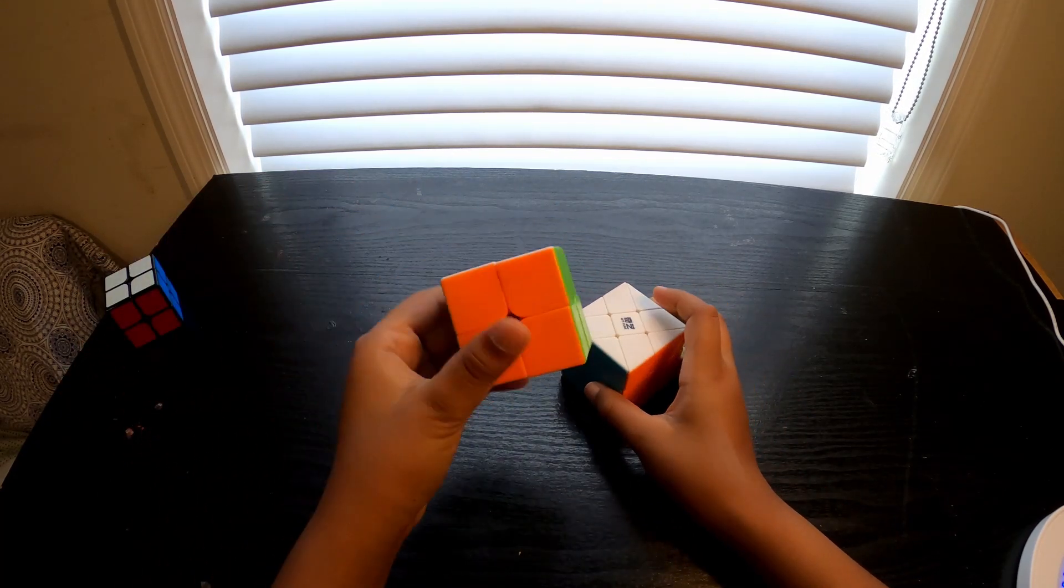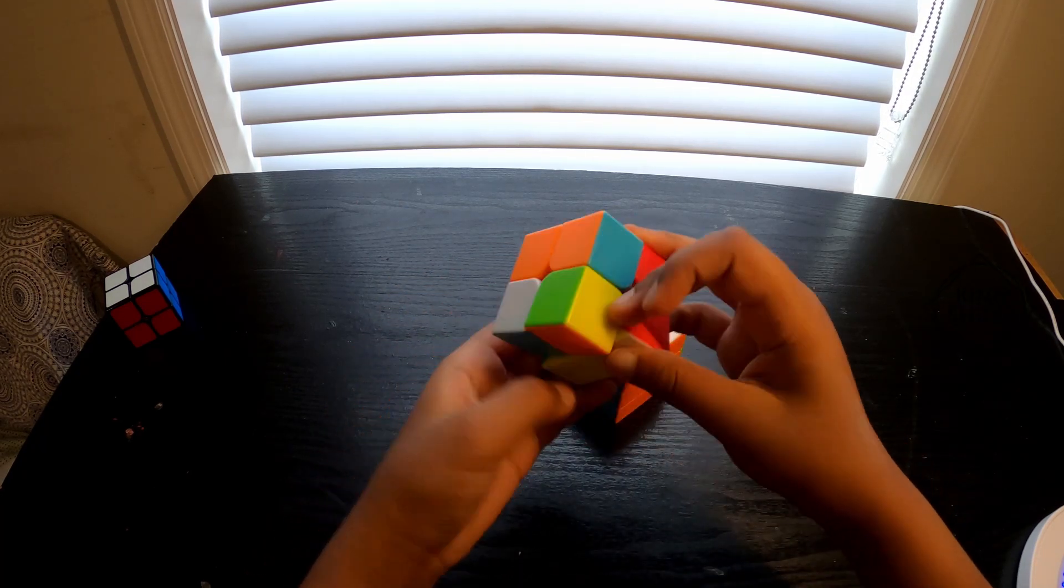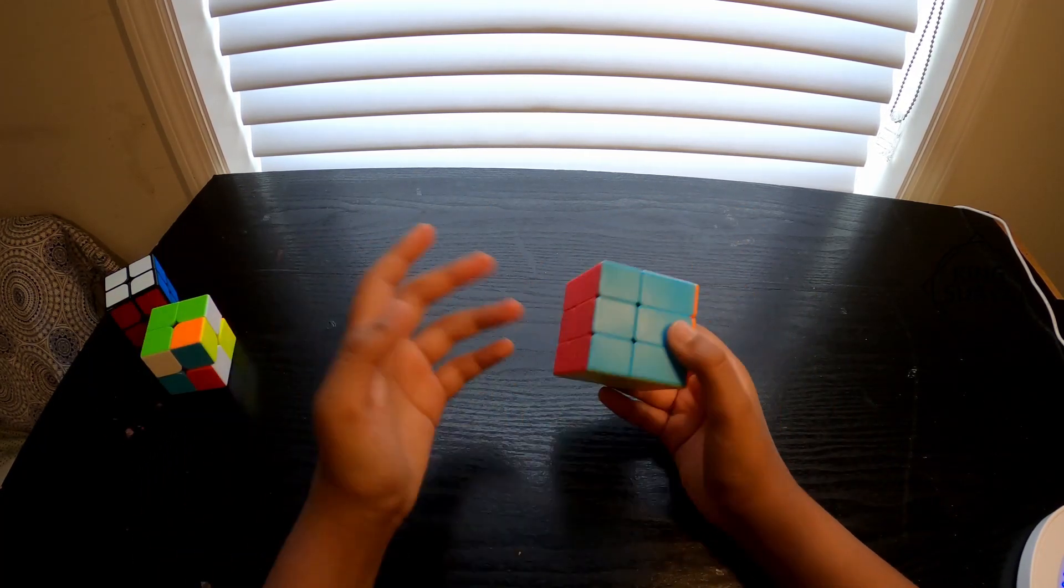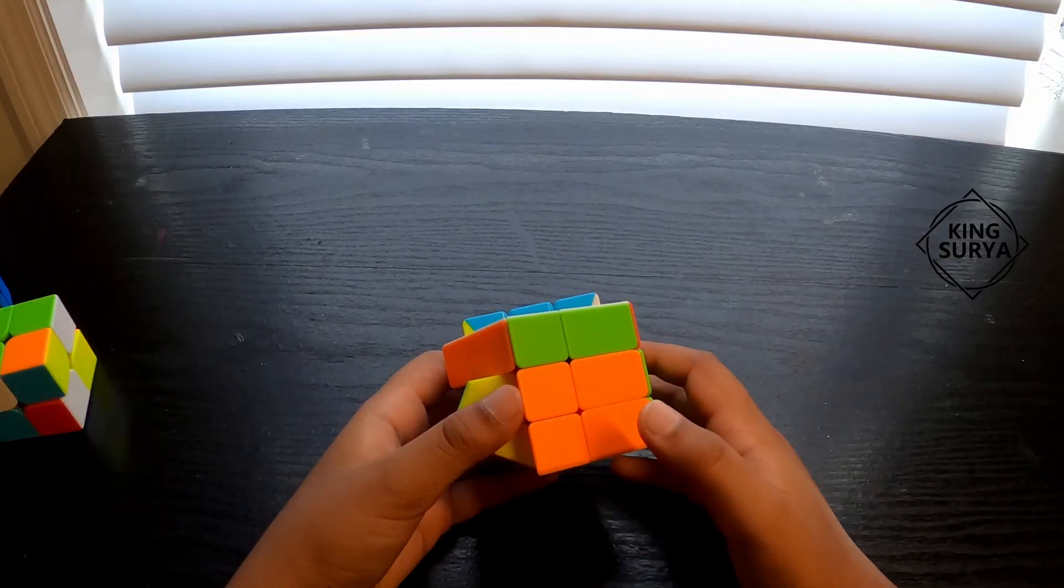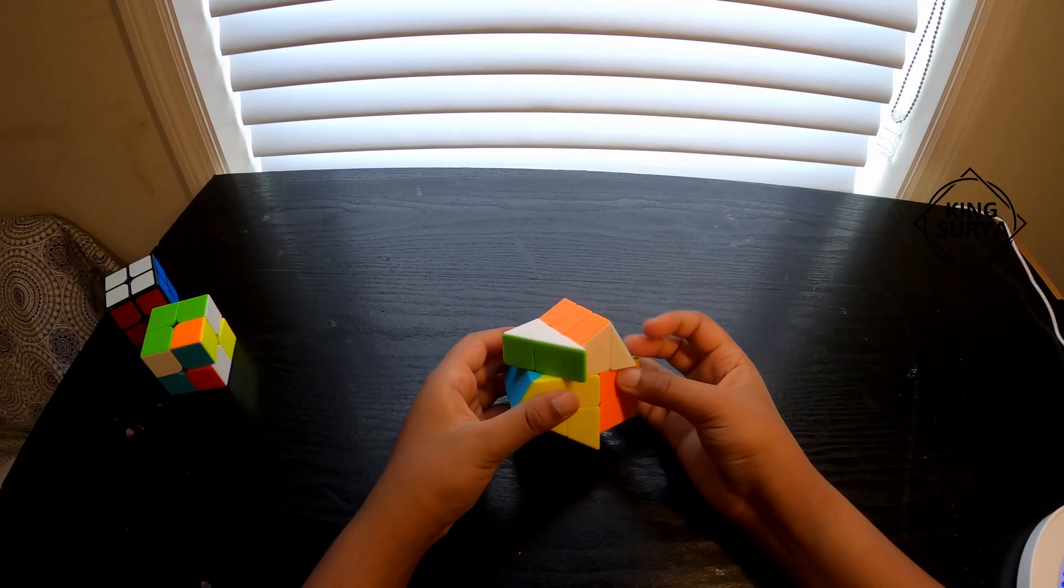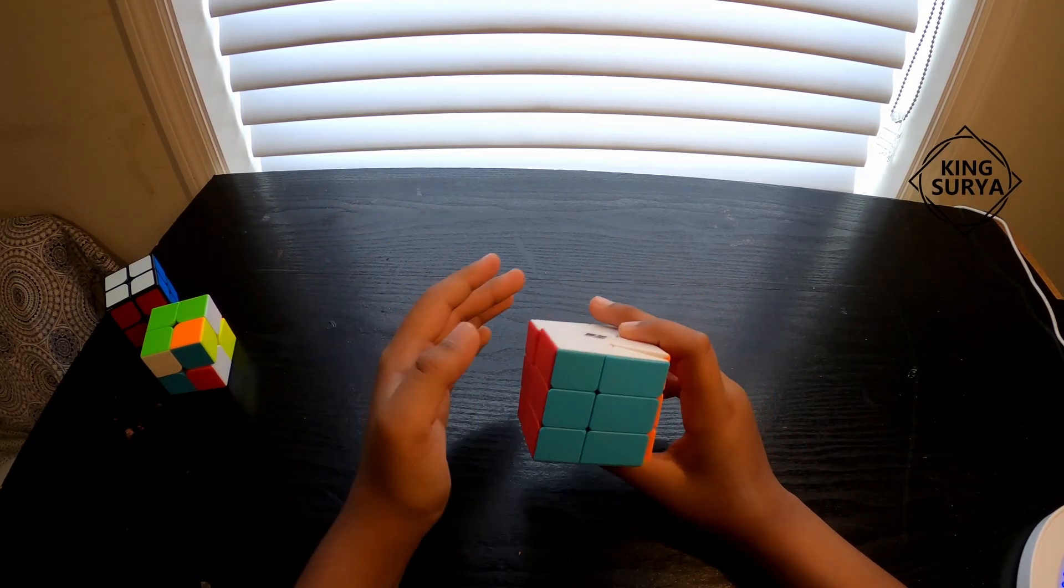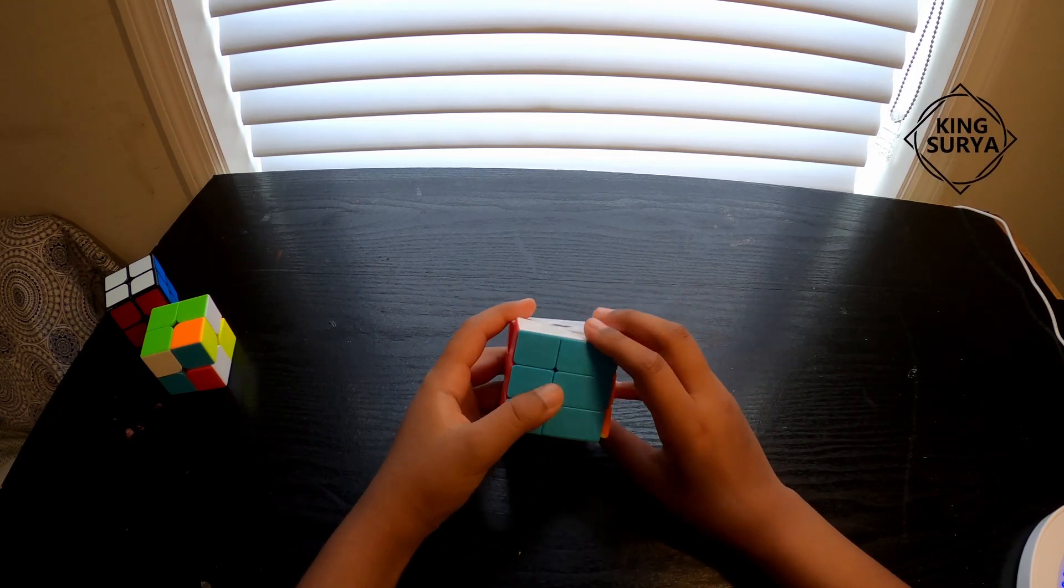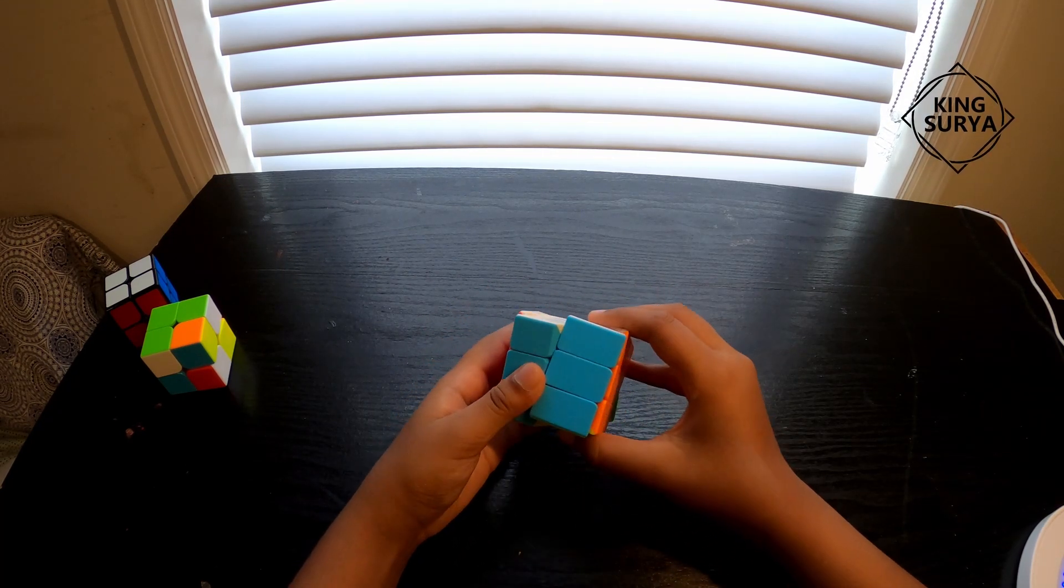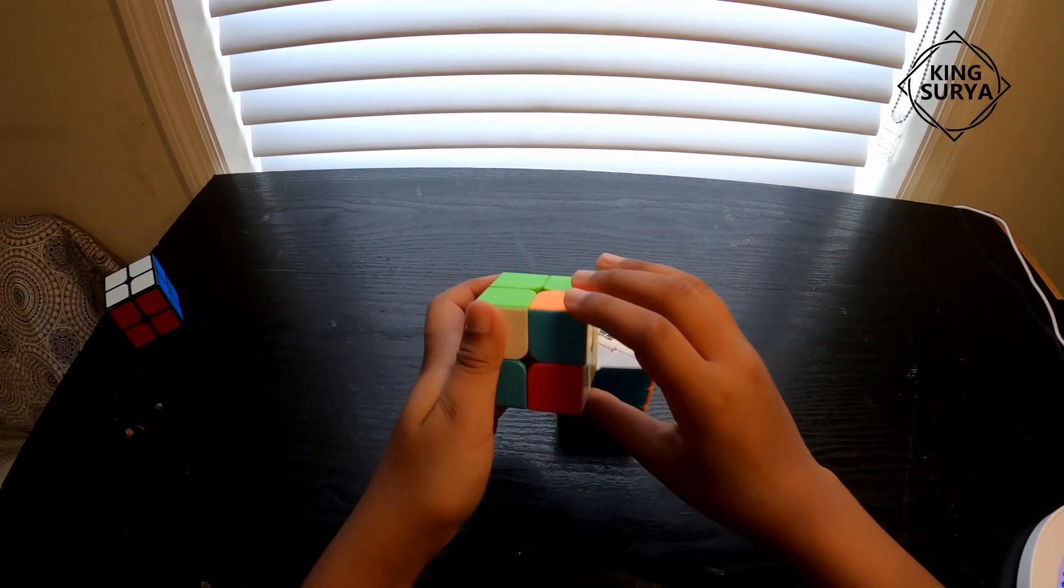It doesn't go like normal cubes. It goes differently. It's a shape-shifting cube which means it shapeshifts. This cube does not turn normally, it turns like this and doesn't have a normal shape. It kind of turns like this instead of just normally.